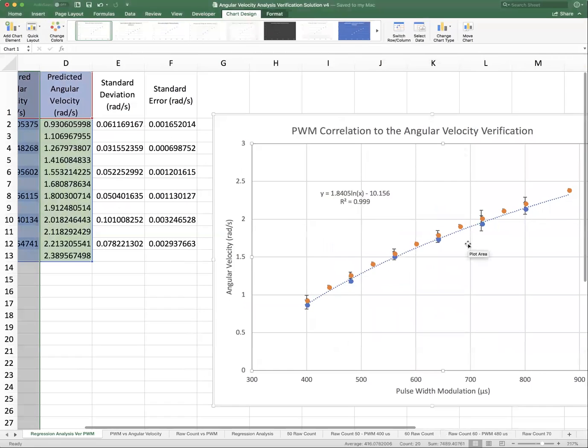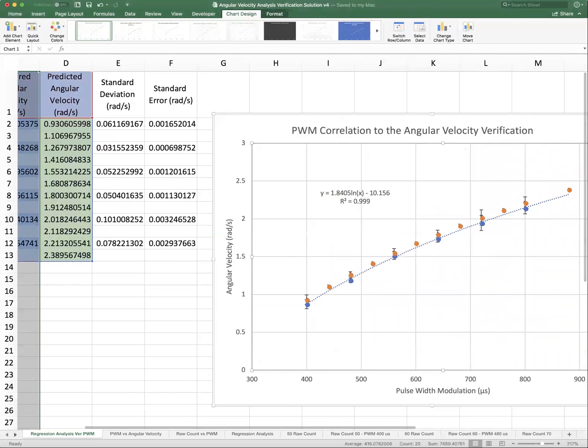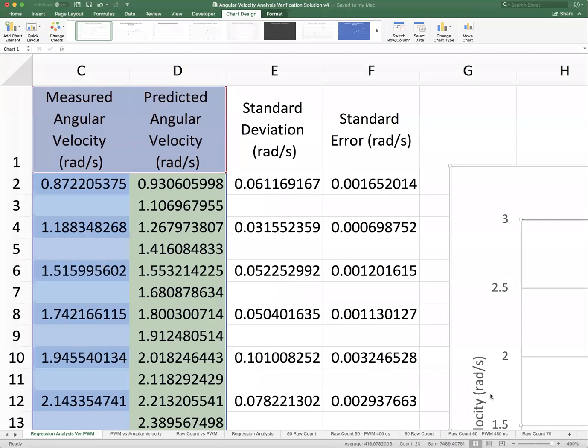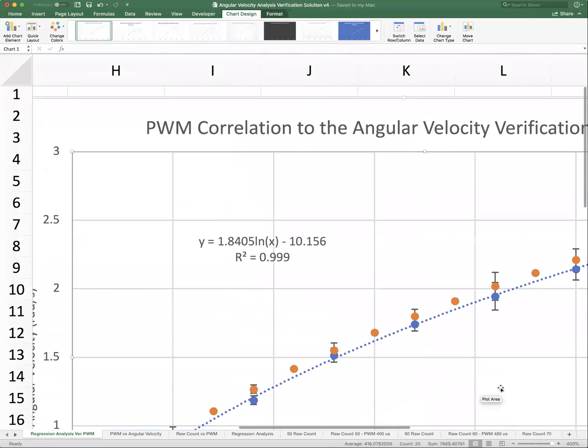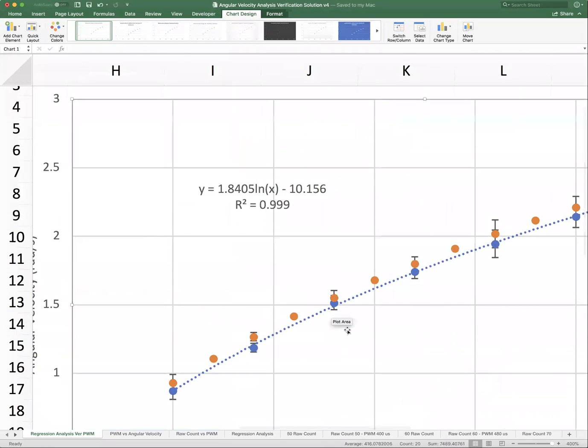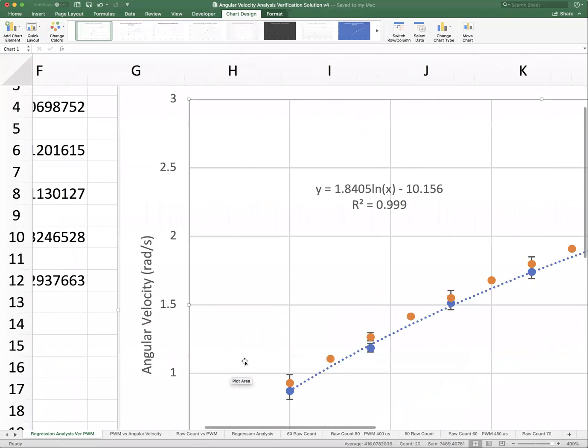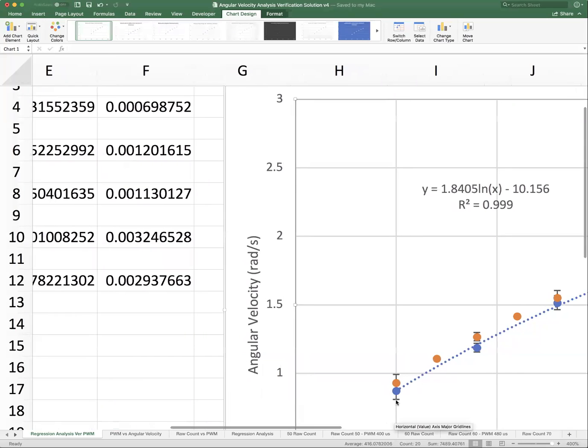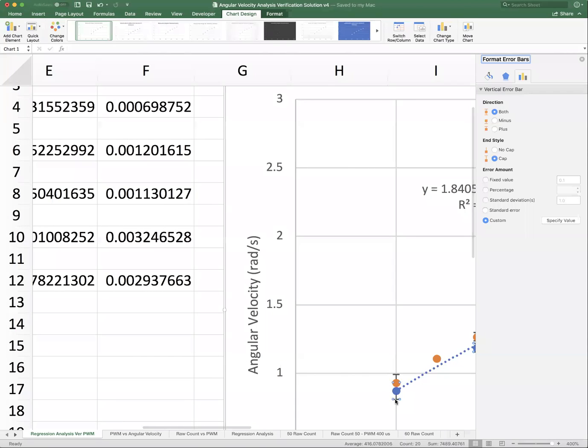So right here if I can go in, it's kind of difficult to see. And what I probably should do is take the error bars off of this series. Let me see if I can take the error bars off of this one. I'll just delete those now.